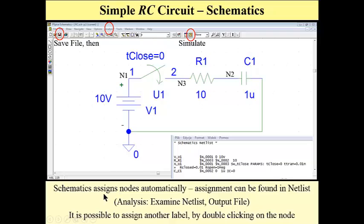Please observe that schematics assigns nodes automatically and this assignment can be found in netlist and this netlist can be found here, analysis, examine netlist or in the output file. Here, we have a schematics netlist from analysis, examine netlist. It is possible to assign another label to each node, but I'm not going to discuss this issue.